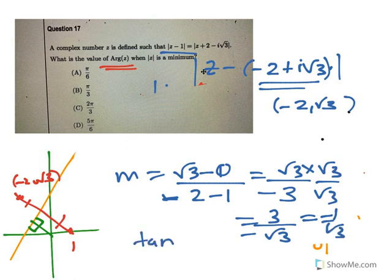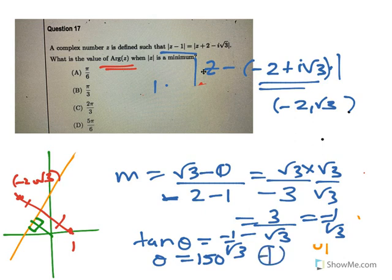When tan theta equals minus 1 on root 3, that angle will actually be - the acute one will be 30, but because it's got a negative, it's in the second quadrant, so it's actually the obtuse angle. That angle there will be 150.